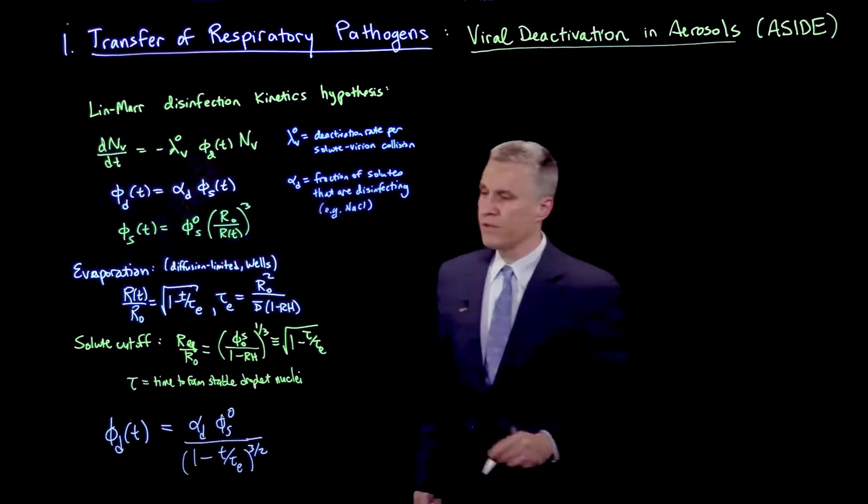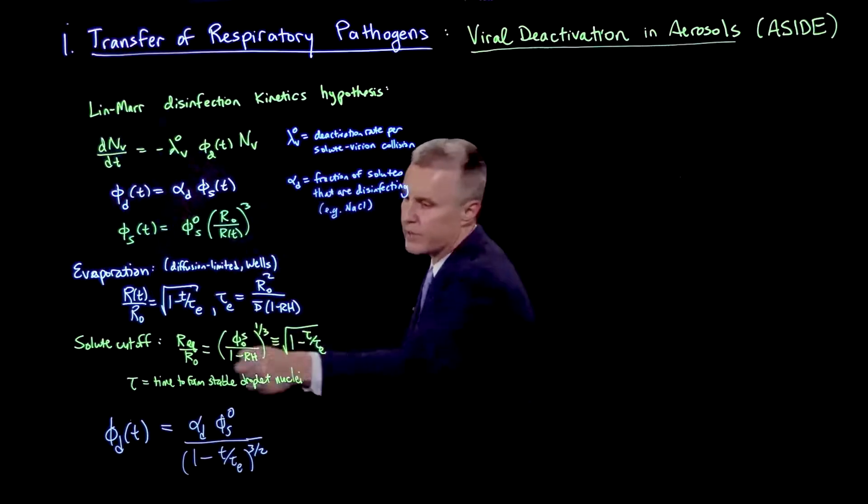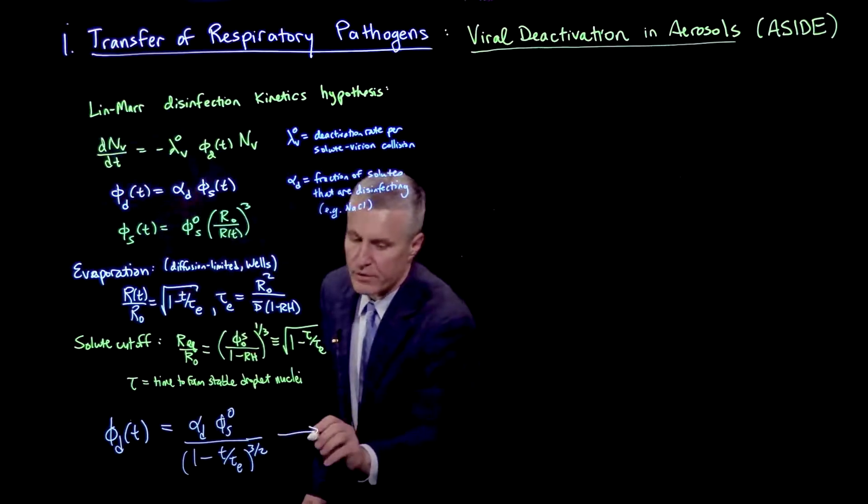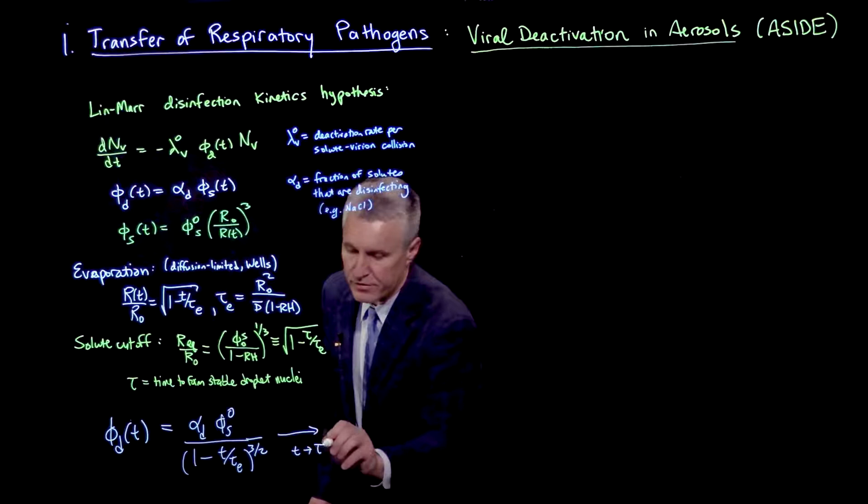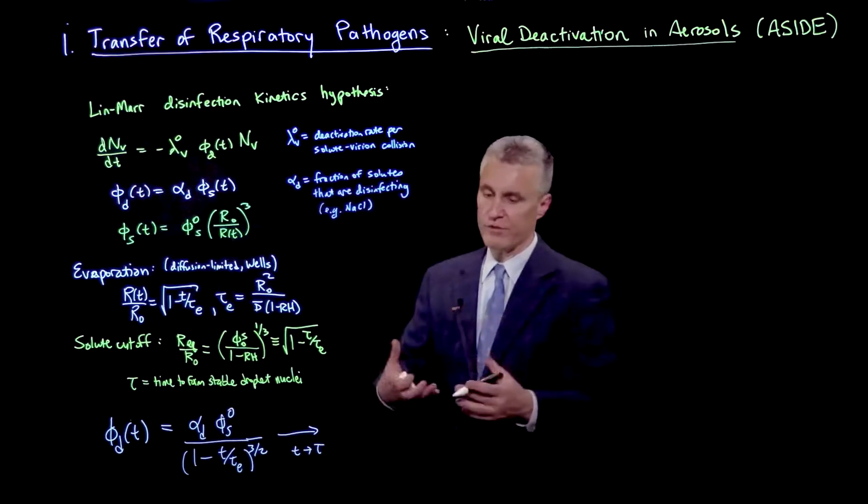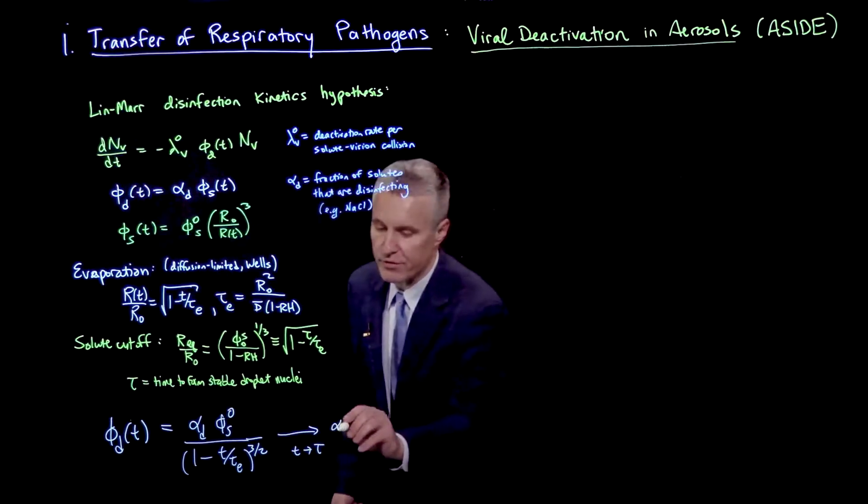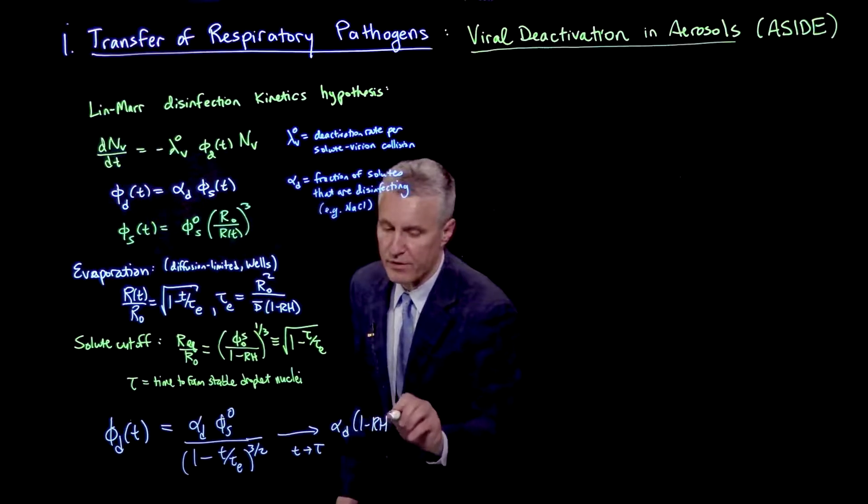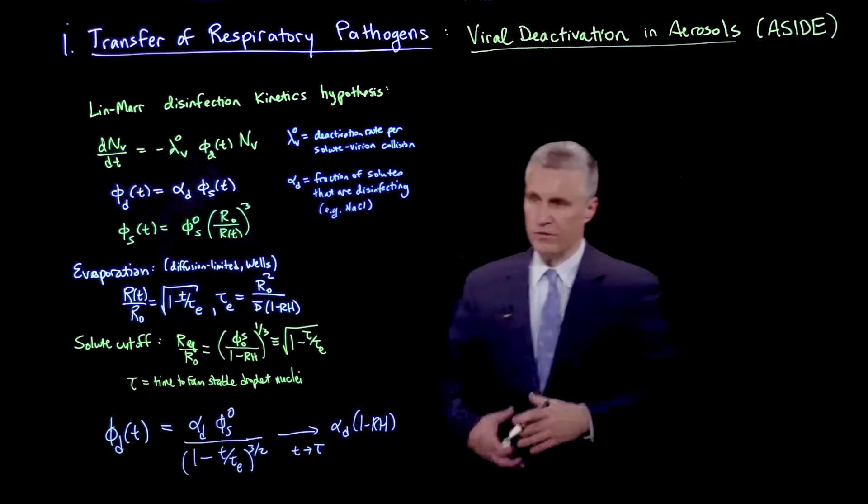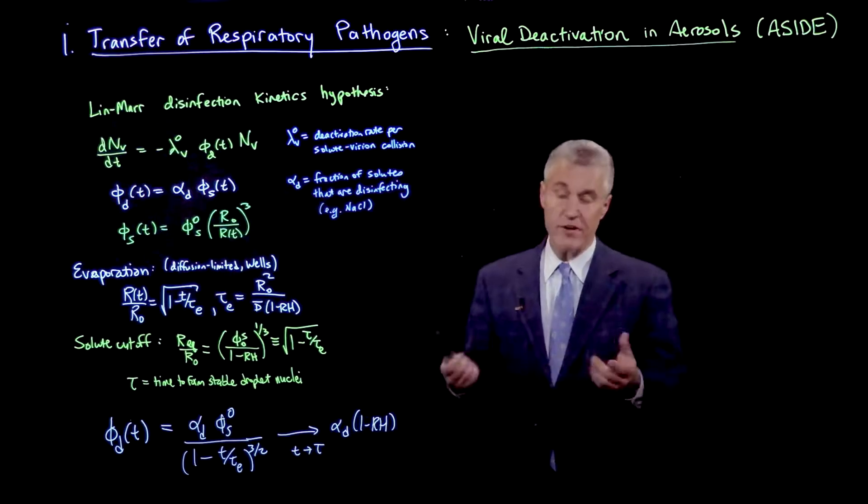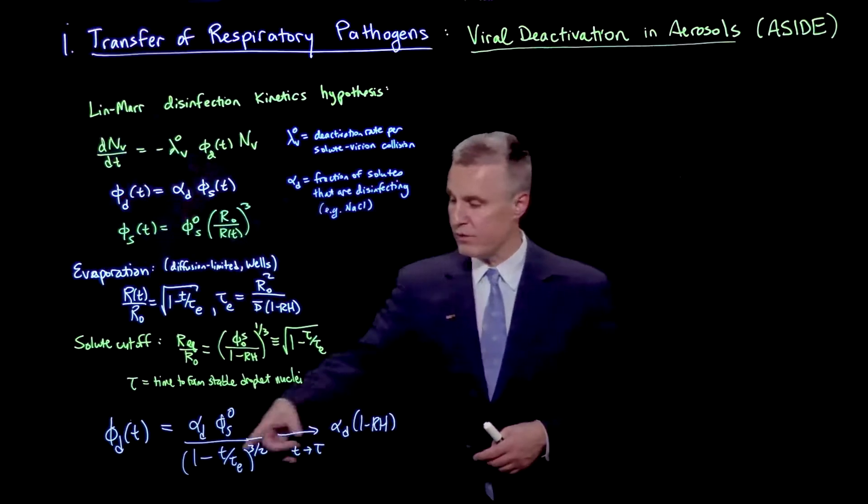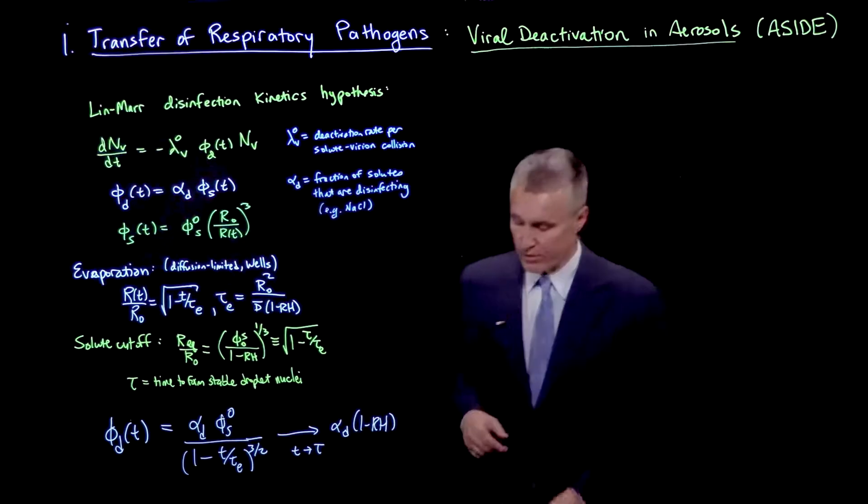If we look at the ultimate limit when there's a solute, when t goes to tau, the evaporation time, when you reach the droplet nucleus stage, we're left with just alpha d times 1 minus rH. That tells us the fraction of solutes which are present as a function of relative humidity, but also as a function of time as drying is going on.